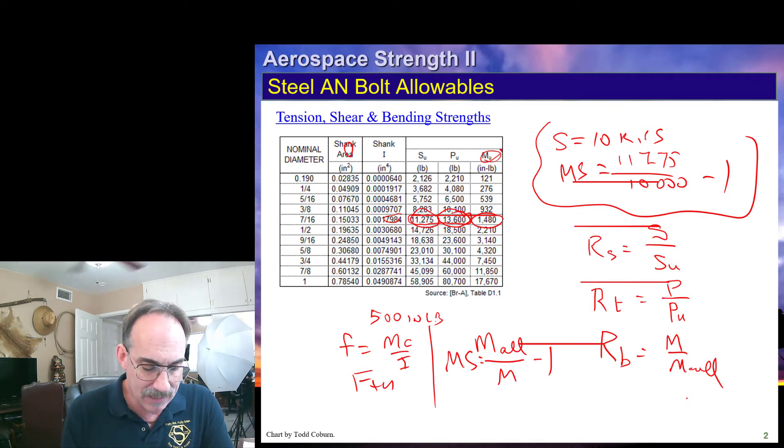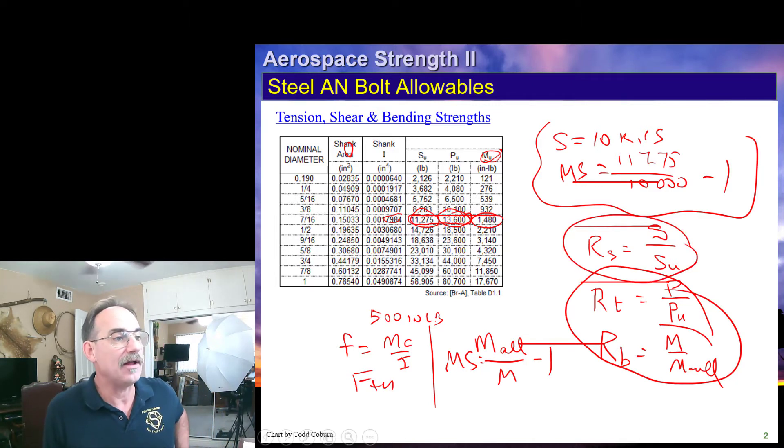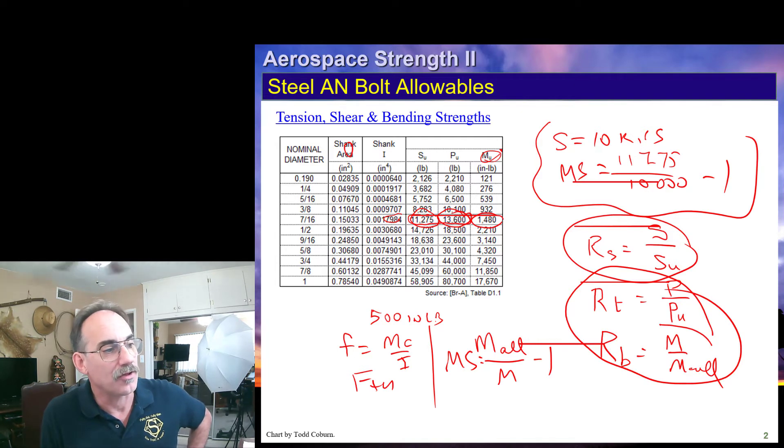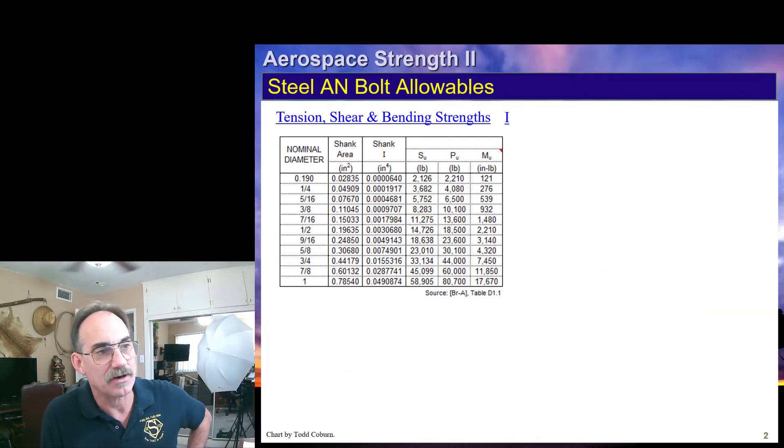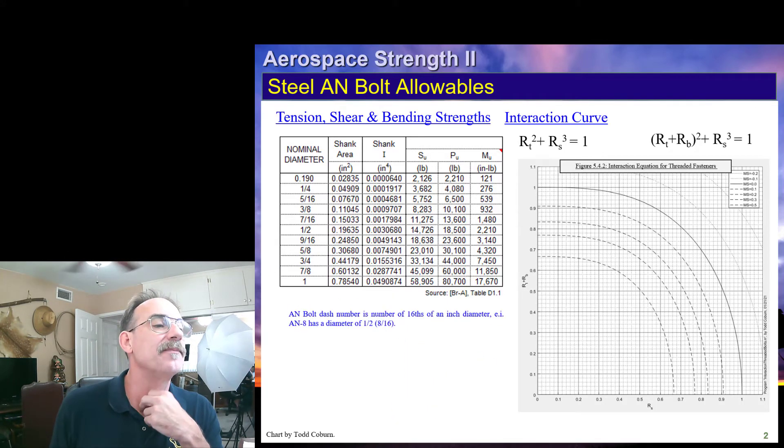We then combine. We take RB and RT, add those together, and we take RS. And we take those two values, and we go to our threaded fastener interaction curve, which looks like this, and write the margin of safety.